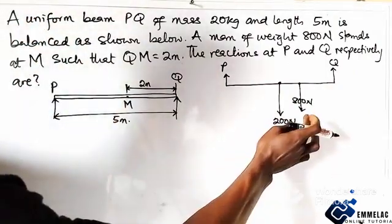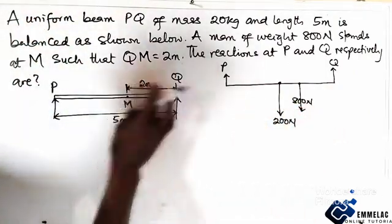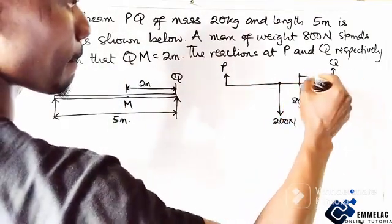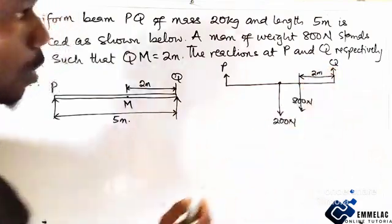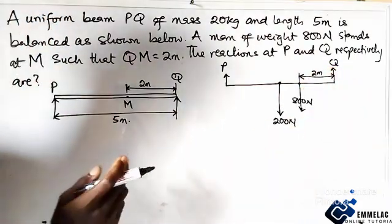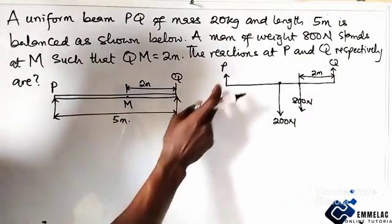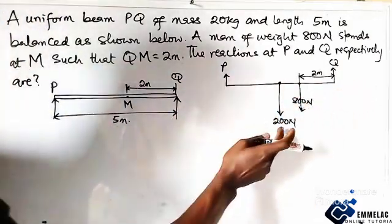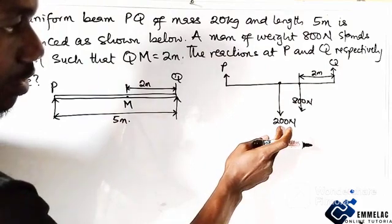So let us ascertain the distance. This is 2 meter. Alright, now let us take note of this. If from here to here is 5 meter, and here is the center.